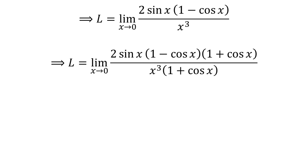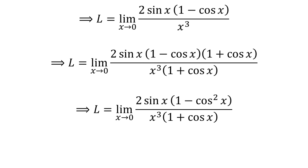Multiplying the numerator and the denominator of a fraction by a common factor does not change the value of the fraction. So let us multiply the numerator and the denominator by the common factor 1 plus cosine of x. Since 1 minus cosine of x times 1 plus cosine of x is equal to 1 squared minus cosine squared of x, L is equal to limit of 2 times sin of x times 1 minus cosine squared of x upon cube of x times 1 plus cosine of x as x approaches 0.